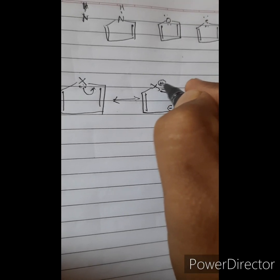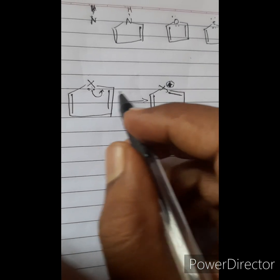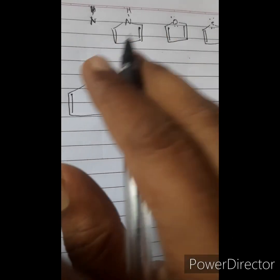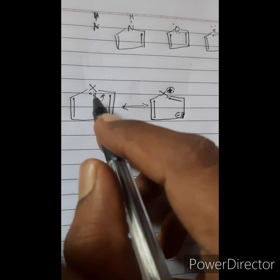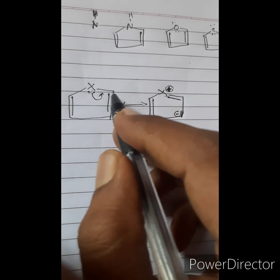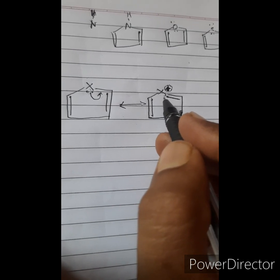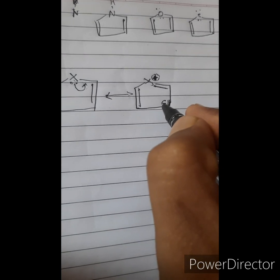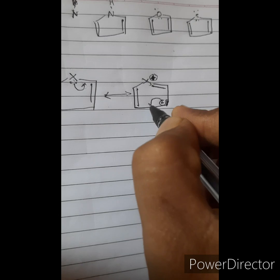You have to put a positive charge on the heteroatom for all these heterocycles. Because the molecule is neutral and the lone pair of electrons on the heteroatom are now becoming part of the new bond, there is a positive charge on the heteroatom.